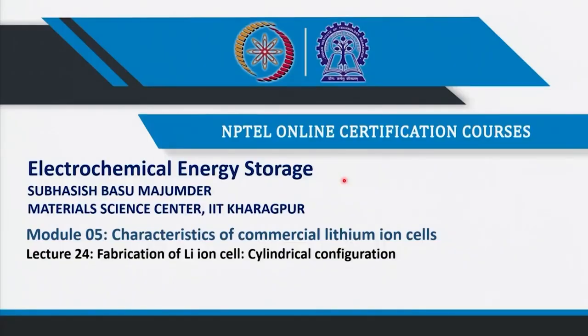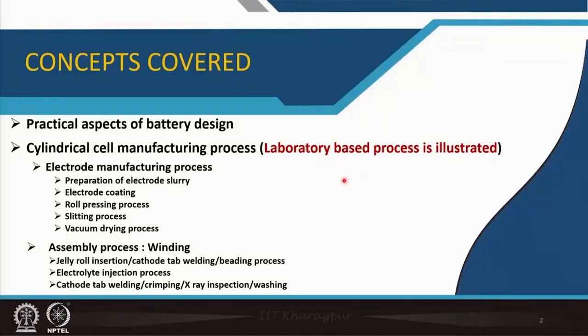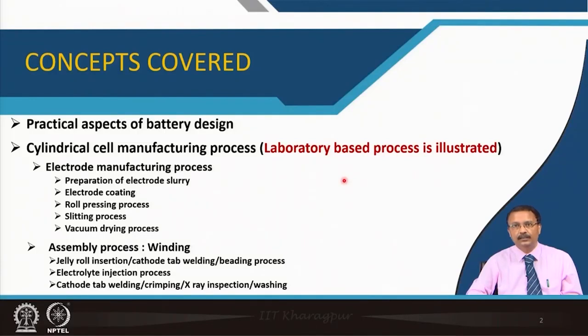Welcome to the course Electrochemical Energy Storage. We are now in module 5, discussing the characteristics of commercial lithium-ion cells. This is lecture 24, where I will describe the fabrication of a lithium-ion cell — particularly the laboratory-based cell fabrication process, since it is difficult to get the exact roll-to-roll processing of commercial lithium-ion cells, but this will give a vivid idea of how the cells are manufactured.